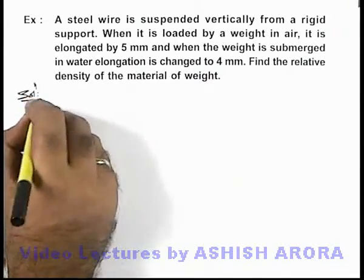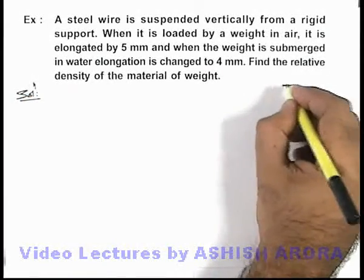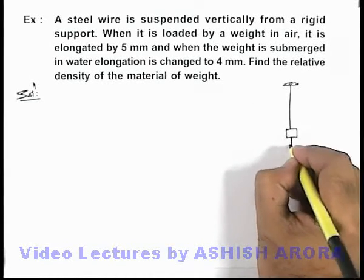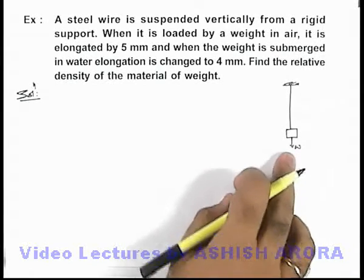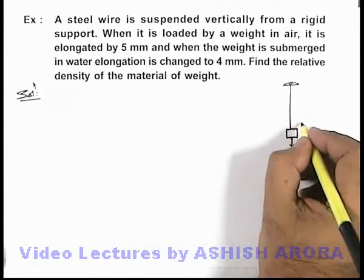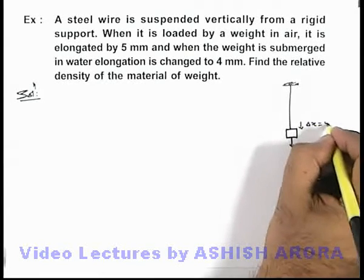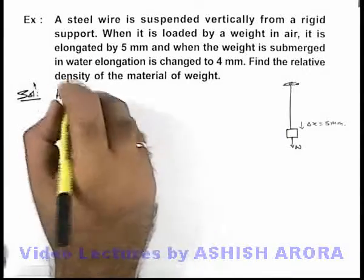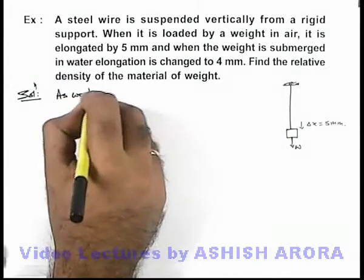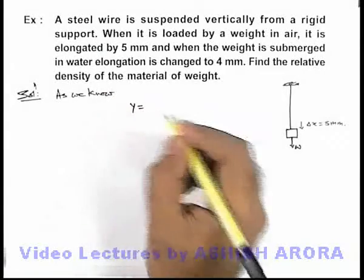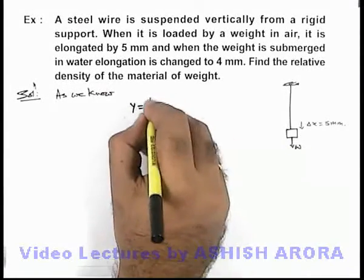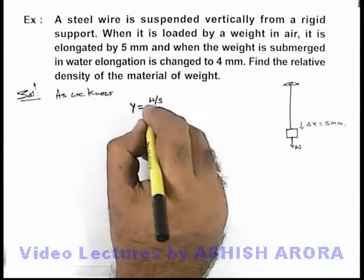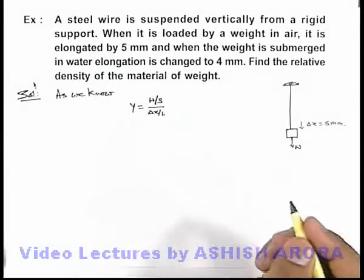In this situation, we can draw the setup: initially, a weight W is suspended from the wire in air, and due to its weight, the wire is elongated by a length delta x, which is given as 5 mm. Using the definition of Young's modulus, we can write: Young's modulus Y equals stress divided by strain, where stress is W divided by the cross-sectional area S of the wire, and strain is delta x divided by L, the length of the wire.